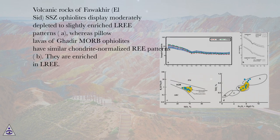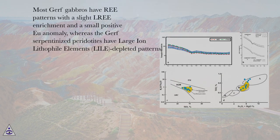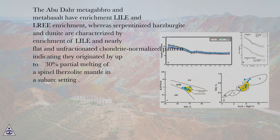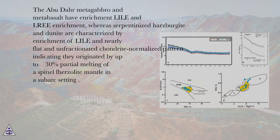SSZ ophiolites display moderately depleted to slightly enriched REE patterns (A), whereas pillow lavas of Gadir MORB ophiolites have similar chondrite-normalized REE patterns (B) and are enriched in LREE. Most Jurf gabbros have REE patterns with a slight REE enrichment and a small positive Eu anomaly, whereas Jurf serpentinized peridotites have large ion lithophile element (LILE)-depleted patterns. Abu Dhar metagabbro and metabasalt have LILE and LREE enrichment, whereas serpentinized harzburgite and dunite are characterized by LILE enrichment and nearly flat, unfractionated chondrite-normalized patterns, indicating they originated by up to 30% partial melting of a spinel-lherzolite mantle in a subduction-related setting.